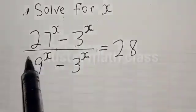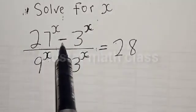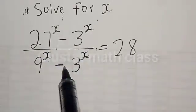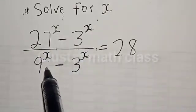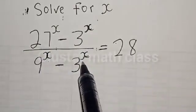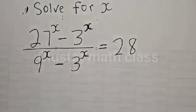Solve for x. 27 raised to power x minus 3 raised to power s, divided by 9 raised to power s minus 3 raised to power s, is equal to 28.